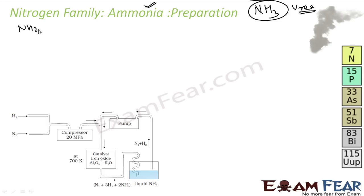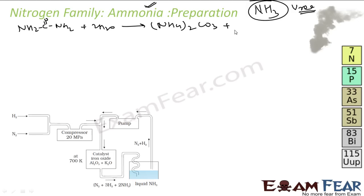The reaction goes like this: NH2CONH2 (urea) takes some water and moisture, you get (NH4)2CO3, and this becomes NH3 plus H2O plus CO2. That is the reaction — this is how ammonia is produced naturally.